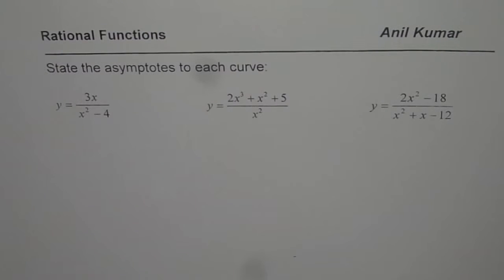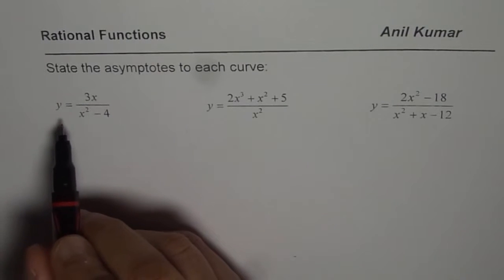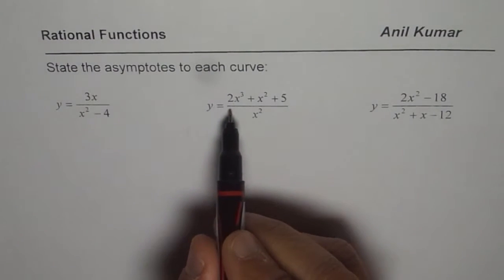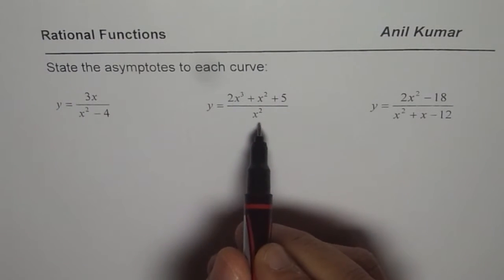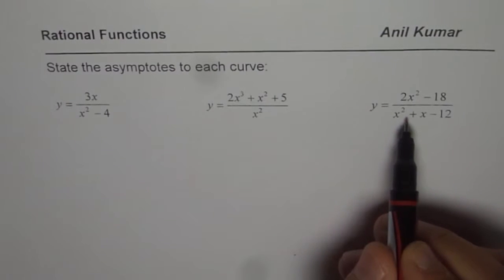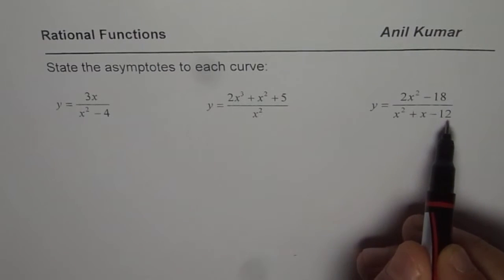I am Anil Kumar and in this video we will prepare for our test and learn how to find asymptotes for rational functions. I have taken three rational functions here, also from my student's assignment. The first one is y equals to 3x over x squared minus 4. The second one is 2x cubed plus x squared plus 5 divided by x squared, and the third one is y equals to 2x squared minus 18 divided by x squared plus x minus 12.